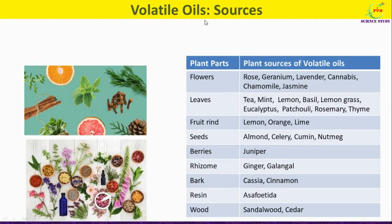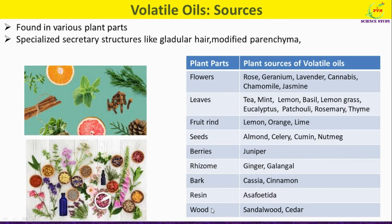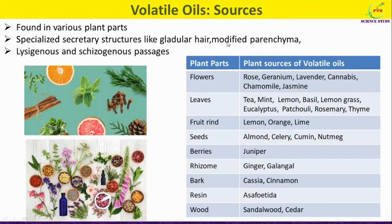Volatile oils are the essential principles found in various plant parts like leaf, bark, flower, fruit, seed, etc. Depending on the plant family, volatile oils may occur in specialized secretory structures such as glandular hairs, as well as modified parenchyma found in members of Piperaceae, and from lysigenous and schizogenous passages common in members of Rutaceae and Pinaceae.